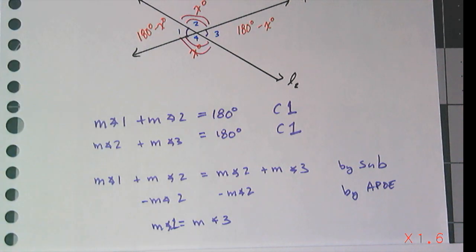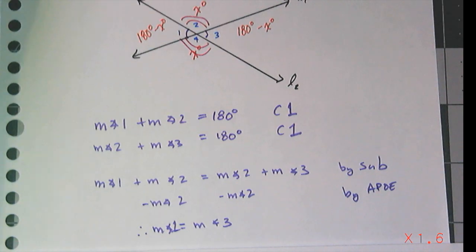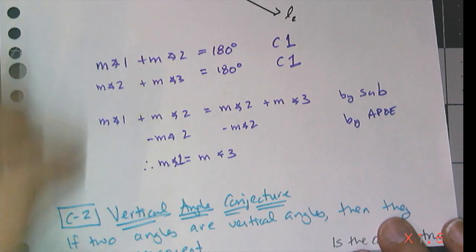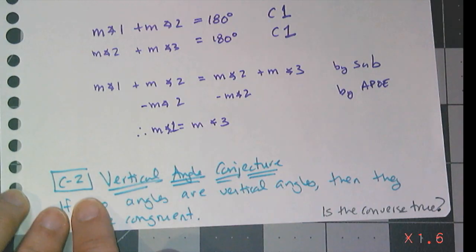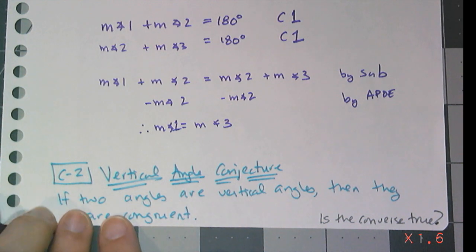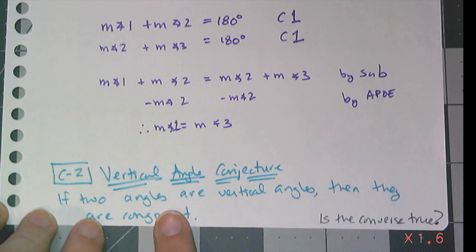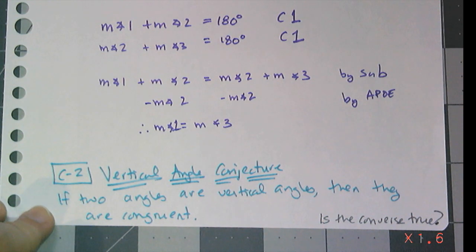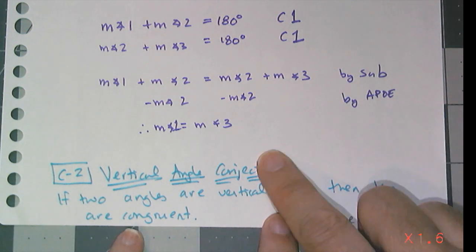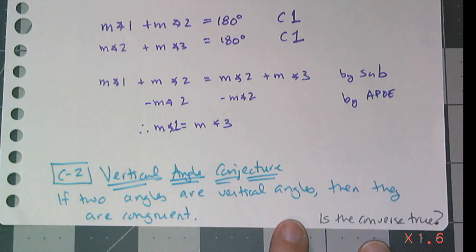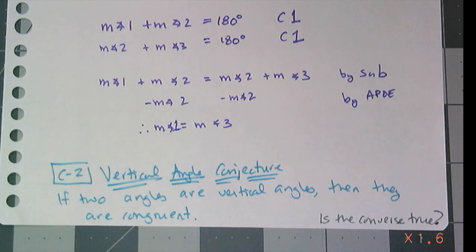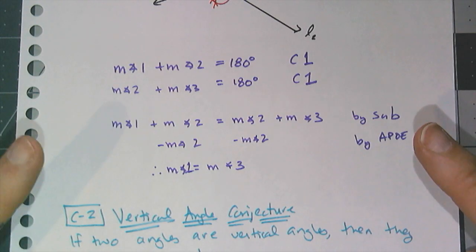This leads us to conjecture two. Write this down — it's super important. C2, the Vertical Angles Conjecture, says: if two angles are vertical angles, then they are congruent. You're going to use this quite often throughout most of geometry. Of course, I want to check if the converse is true. The converse would say: if two angles are congruent, then they are vertical angles — which can't be true, because vertical angles are formed by two intersecting lines. If you just have two random congruent angles, you know nothing about their relation to each other. So that gives us our first two angle properties.